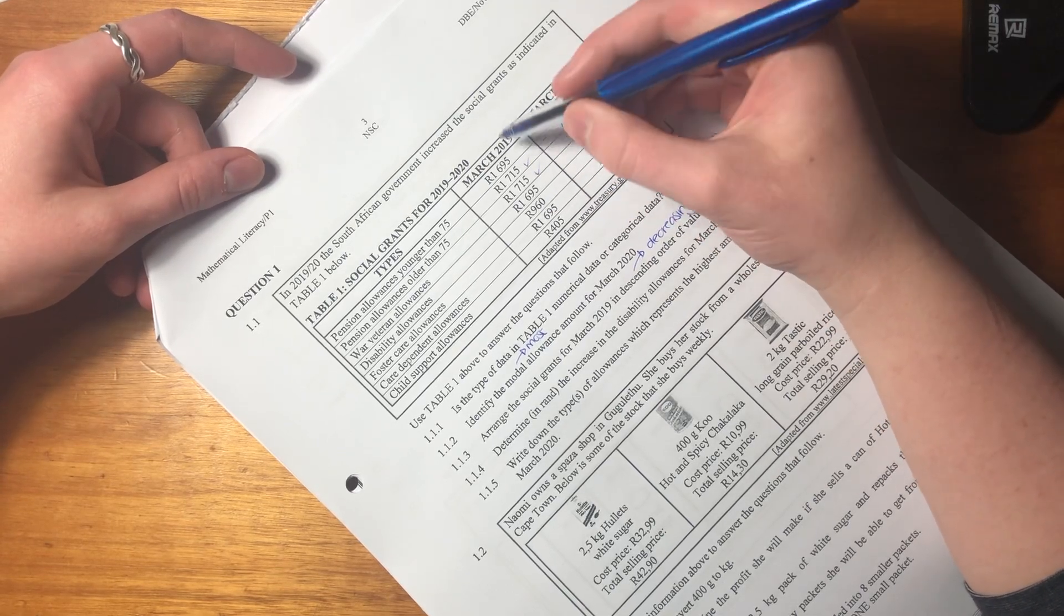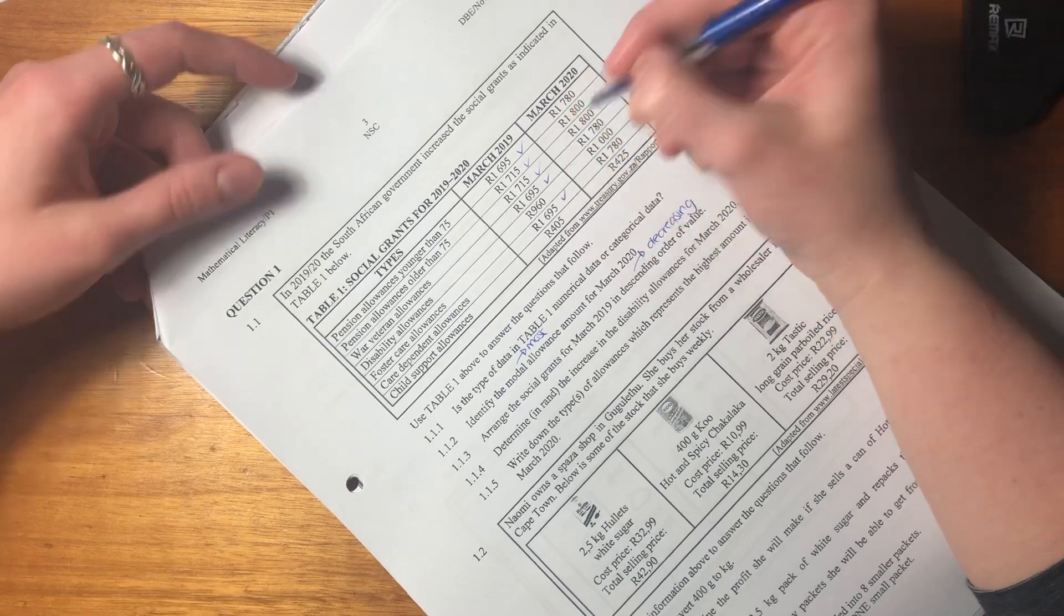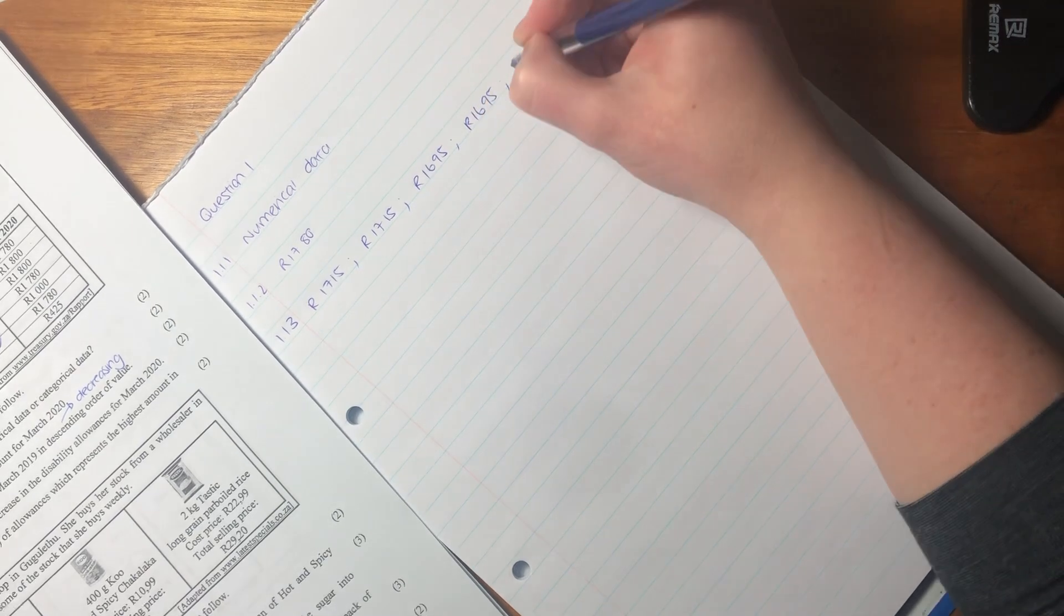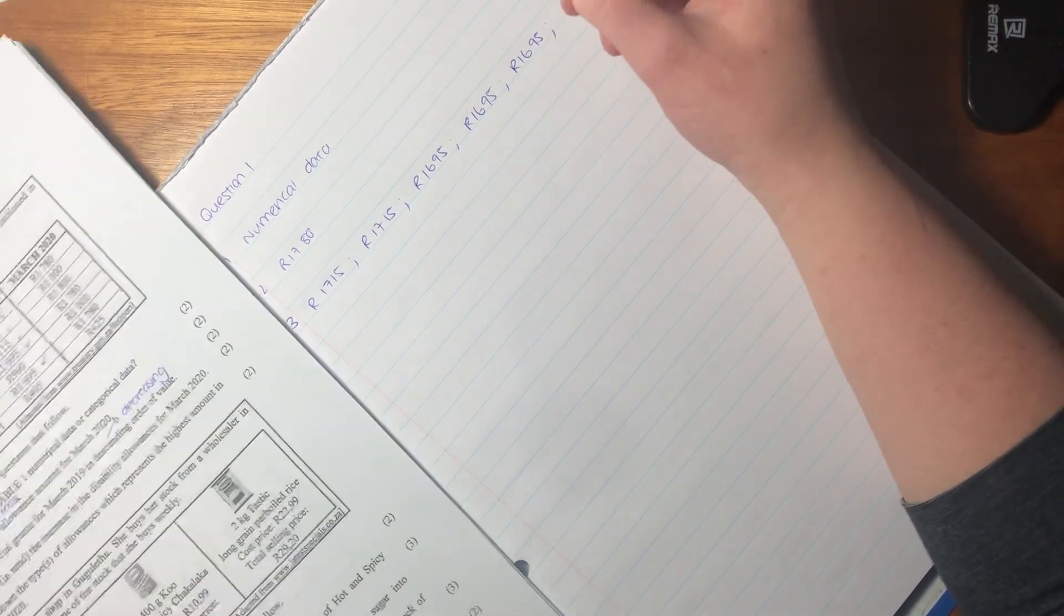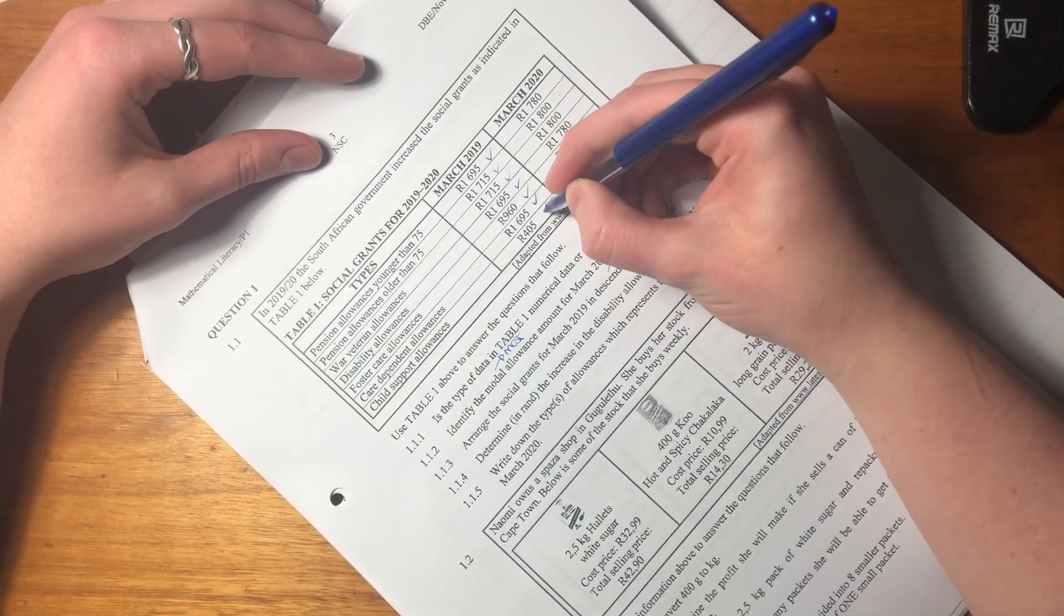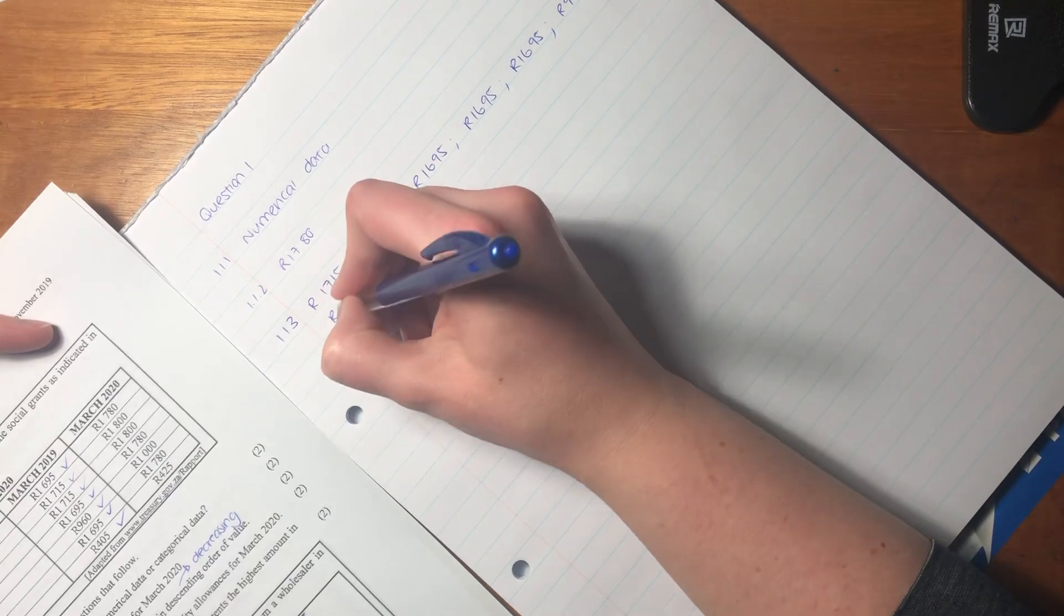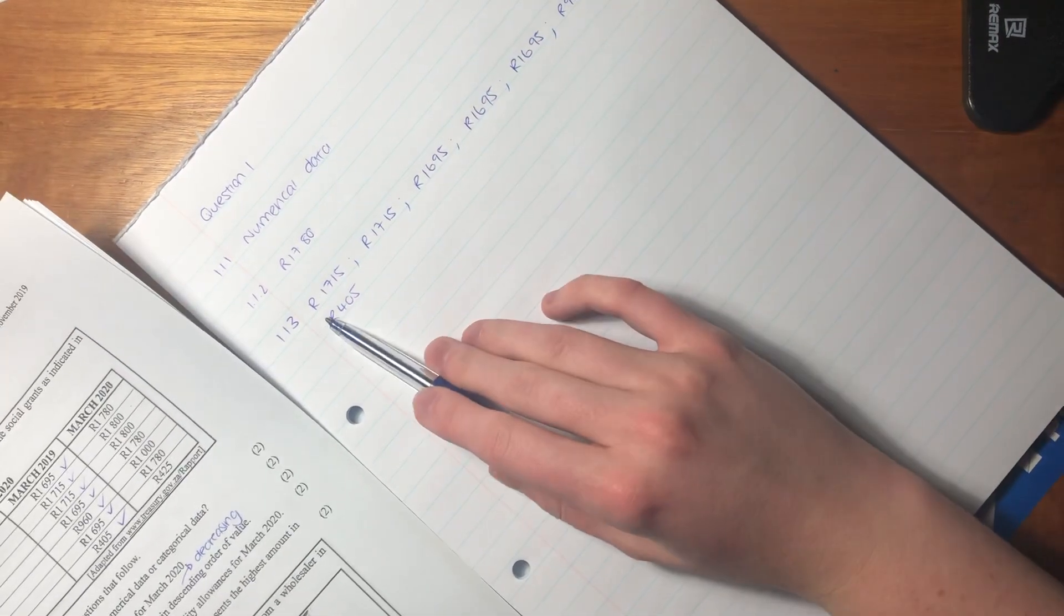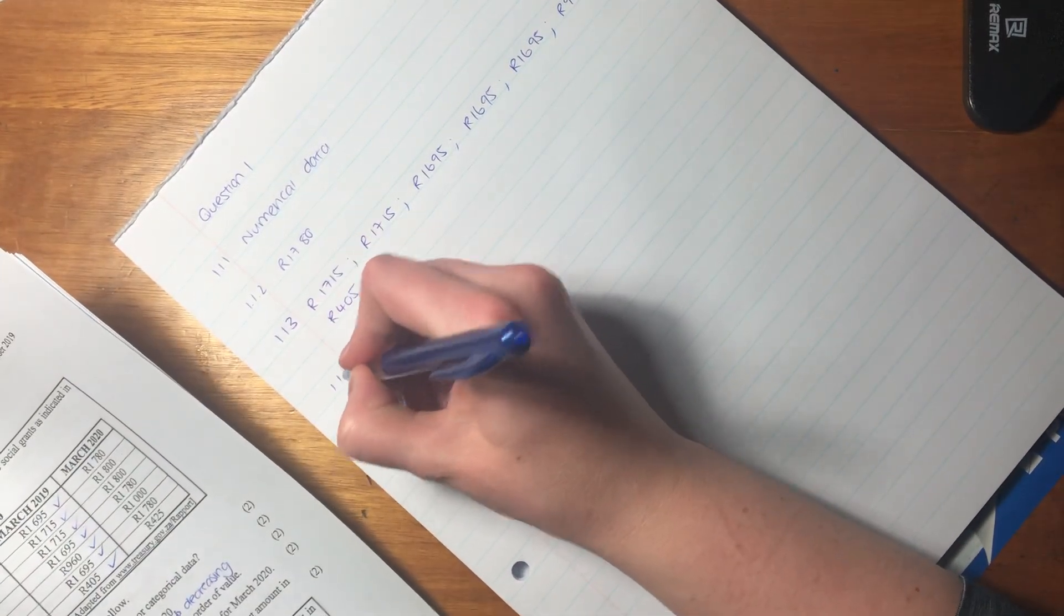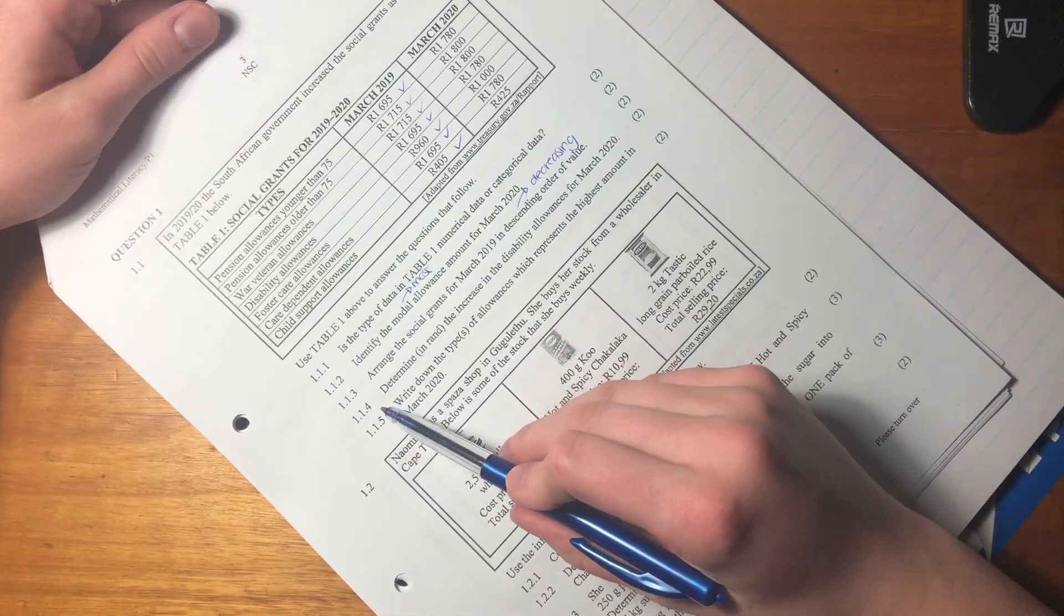So we say 1695, 1695, and 1695. All we have left is 960 and 405, so we say 960 because that's larger than 405 and then we have 405. We have gone from the biggest number all the way down to the smallest number in 2019. We are roaring through this question, smashing it.